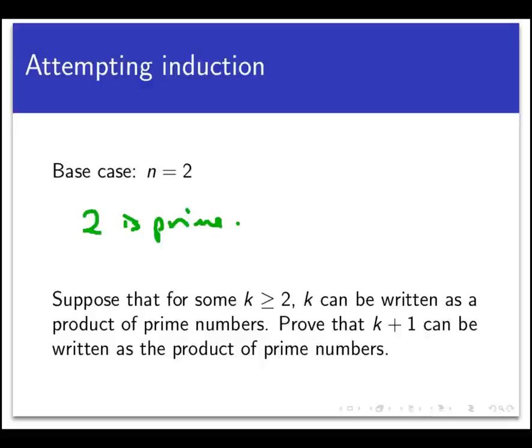Namely, it's not really easy to see how the inductive hypothesis can be used here. I know that if k can be factored into a bunch of primes, it may not help me to see that k plus 1 can be factored into primes. For example, suppose you knew what the prime factorization of the number 2,000 was.